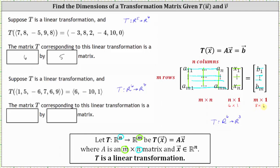So because the output vectors or the vectors in the co-domain have three components, and the input vectors or vectors in the domain have six components, matrix A, the transformation matrix, must be a three by six matrix. Again, because we are mapping from R6 to R3, the transformation matrix is a three by six matrix. I hope you found this helpful. Thank you.